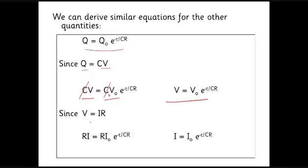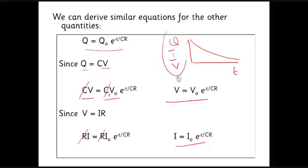I know V equals IR. So if I cancel out, if I write the R's and I cancel out the R's, then I equals I naught. So I get this equation for current. So when I draw this graph of charge against time or current against time or voltage against time, they're all exactly the same shape. It doesn't matter what's going on this axis, I'll just change the numbers on this scale. But the shape of the graph will remain the same.